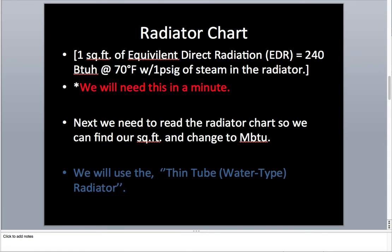So we're going to look at the radiator chart. One thing you're going to realize is one square foot of equivalent direct radiation, EDR, equals 240 BTU British thermal units per hour at 70 degrees with one PSIG of steam in the radiator. We'll need to know this in a minute. You don't have to remember everything verbatim, but we're just going over this real quick.